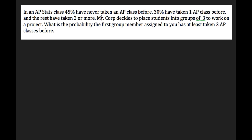Now, there are a couple of things going on here that can trick you. It says that you're placed in a group of three, so you start thinking about geometric and binomial — you might think it's binomial. Then you see 'the first group member,' and you start thinking geometric, assigned to you has taken at least two AP classes before.